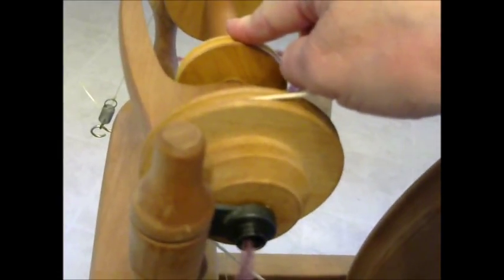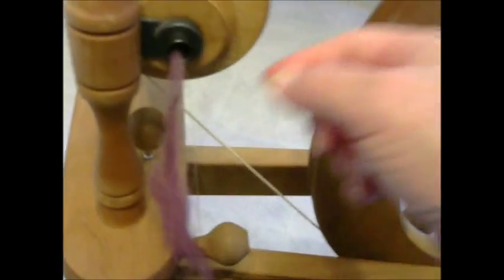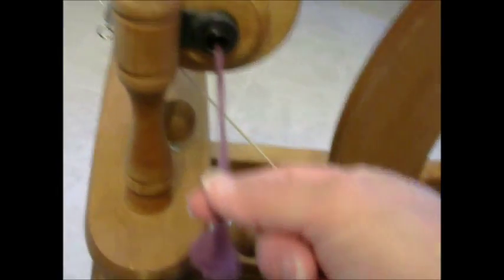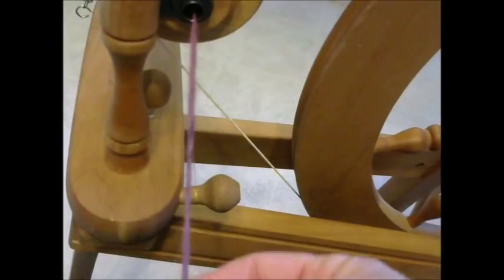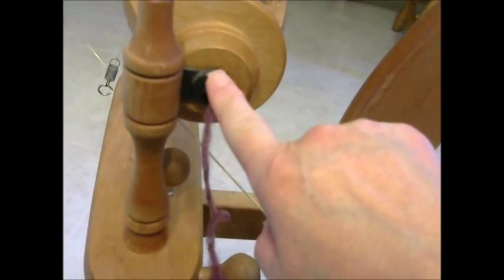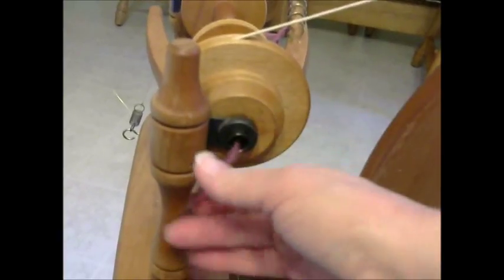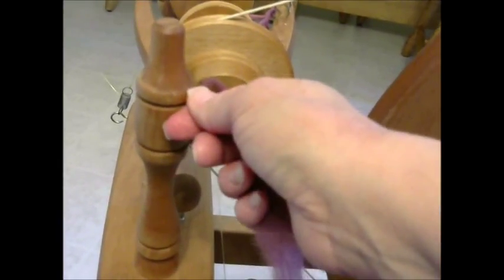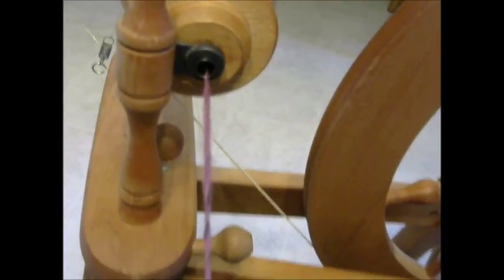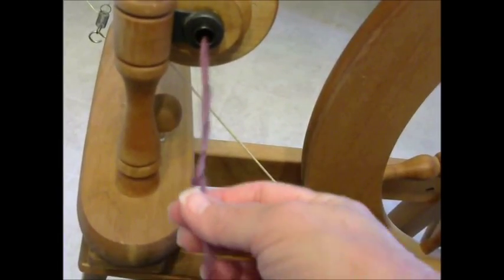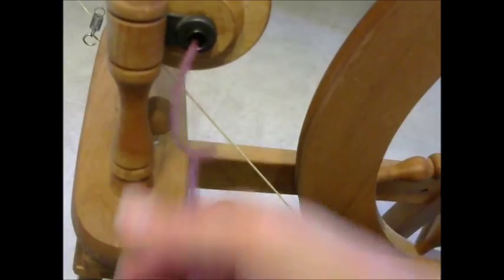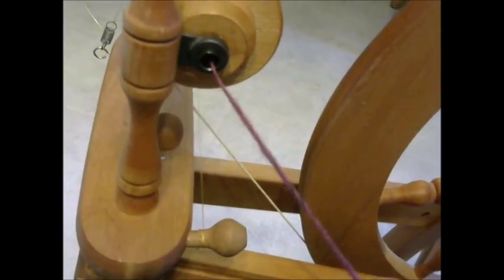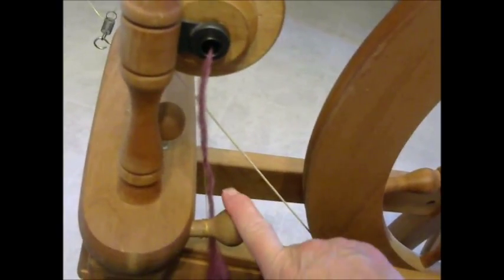It also controls what's called the uptake. The uptake is how fast the fiber, once you've spun it, how fast it's going to get drawn into and onto the bobbin. So if you have the brake set really tight, it's going to go through really fast, whereas if you have it set about even, it's going to go in about at this rate. So you can adjust that depending on how fast you're spinning.